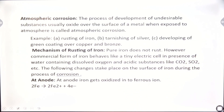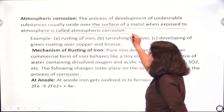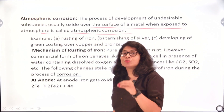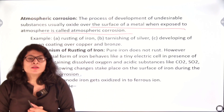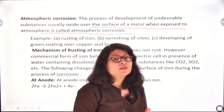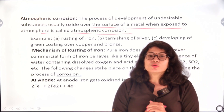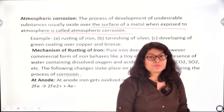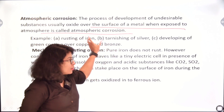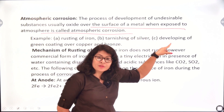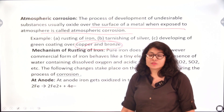The process of development of undesirable substances — usually oxides — over the surface of the metal when exposed to atmosphere is called atmospheric corrosion. Examples include: rusting of iron, tarnishing of silver — silver ornaments after some time get converted into a black-coloured form due to conversion of silver to silver sulphide (Ag₂S), which is called oxidation of silver — and development of a green coating on copper and bronze. Rusting of iron is reddish-brown, tarnishing of silver gives a blackish appearance, and copper/bronze develop a green coating.